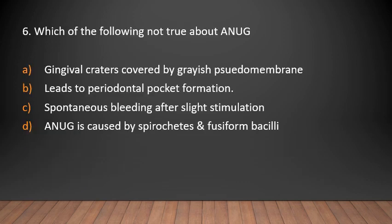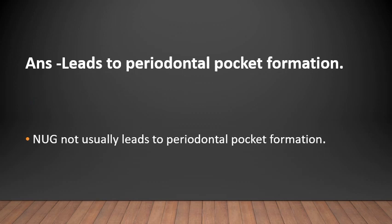MCQ 6: Which of the following is not true about ANUG? Gingival craters covered by grayish pseudomembrane, leads to periodontal pocket formation, spontaneous bleeding after slight stimulation, or ANUG is caused by spirochetes and fusiform bacilli? Answer: Leads to periodontal pocket formation — ANUG does not usually lead to periodontal pocket formation.